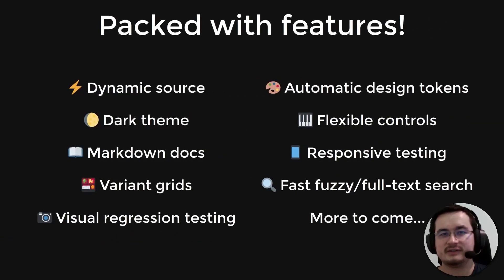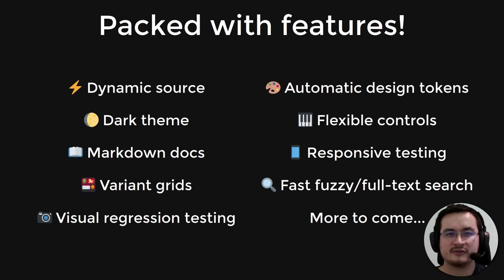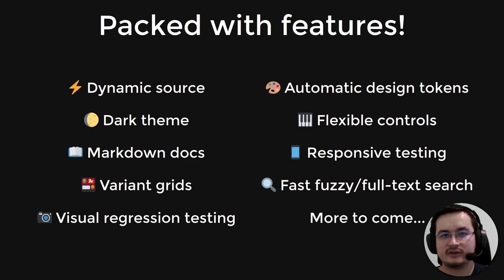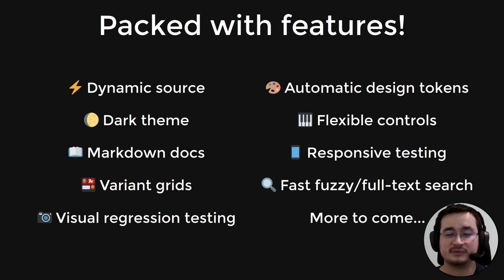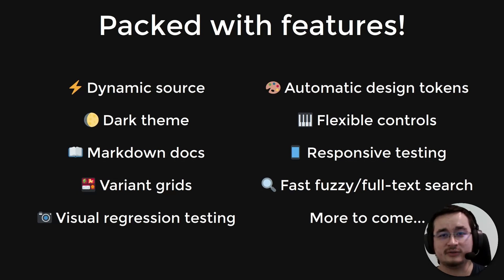Despite being still in development, Histoire is packed with a lot of features you can already try. My favorites are the automatic stories generated from my Tailwind tokens, such as background colors or text sizes. I also really like the variant grids, which allow you to see a lot of different variants at the same time — for example, all the different types of buttons you can have in your application, which I find very useful.